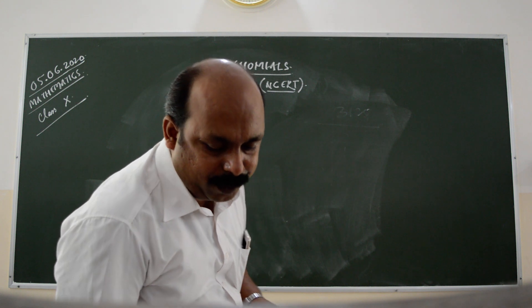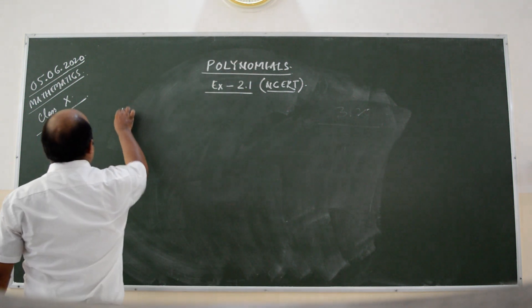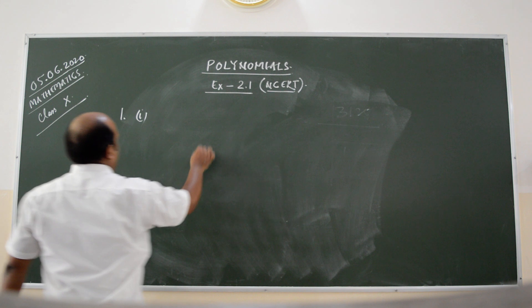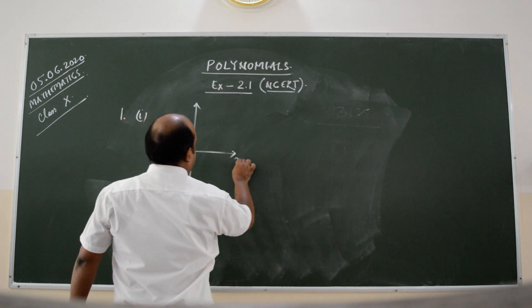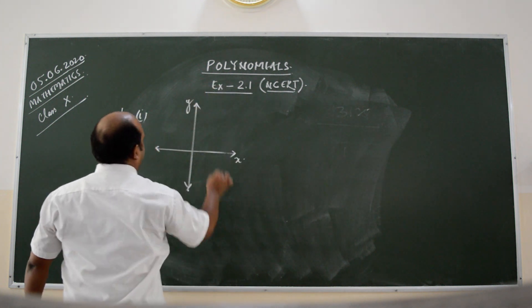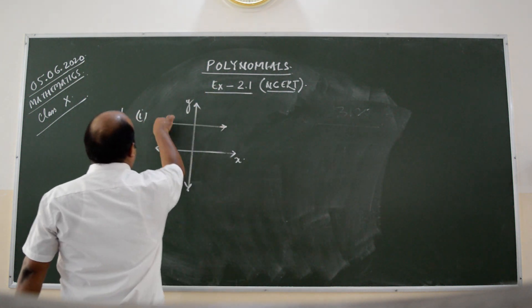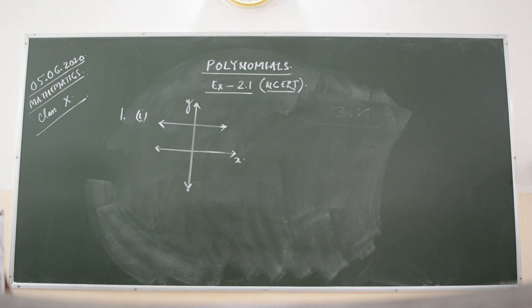Let me take the first question. This is question number 1, part 1. These are the coordinate axes. Let us say this is the x axis and this is the y axis. And this is the graph given of y is equal to p of x.